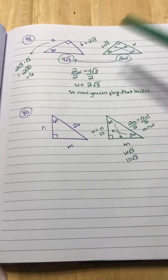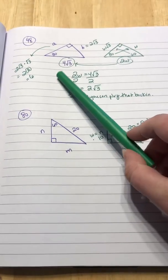All right, so let's look at number 48. You've got a 30, 60, 90 again. There's 30.